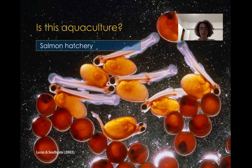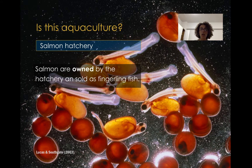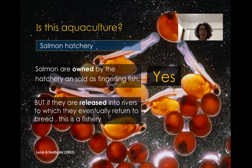In this case, what you have here is larvae and some eggs of a salmon in a salmon hatchery. The salmon are owned by the hatchery and are sold as fingerlings. So this constitutes an aquaculture activity. However, if you then release them into rivers to which they eventually return to breed, this becomes a fishery — it is a restocking of a population, not an aquaculture activity.